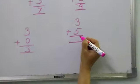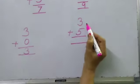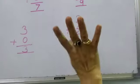3 plus 5. Upper number is 3 and we add 5 more numbers. So, we will stand 5 fingers.